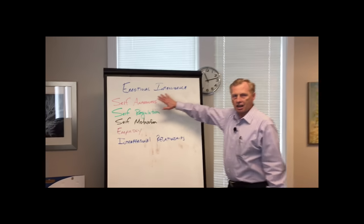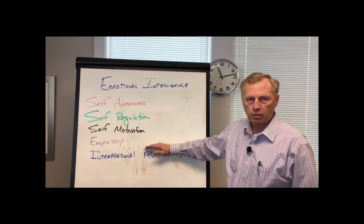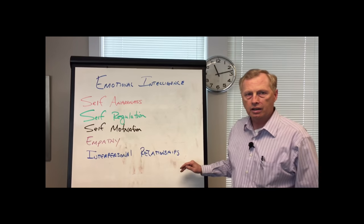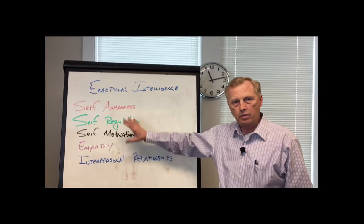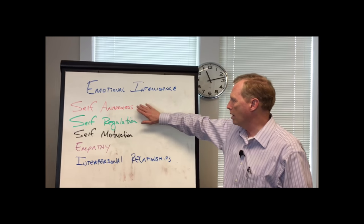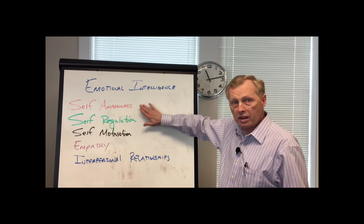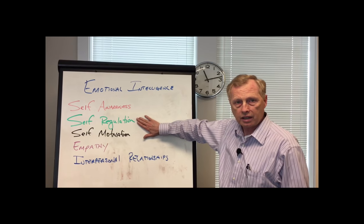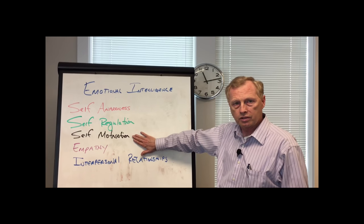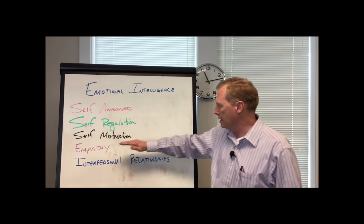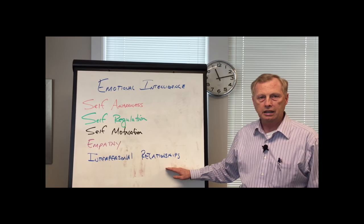Emotional intelligence as a construct has five component parts that we're going to focus on. Now there's more to it than that, but these are the main ones that are very important. Number one: self-awareness. With self-awareness it leads to self-regulation. Self-regulation then goes to self-motivation, empathy, and interpersonal relationships.